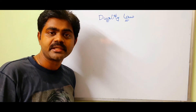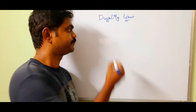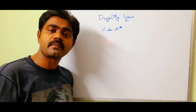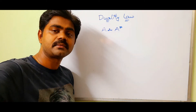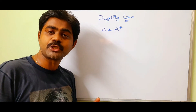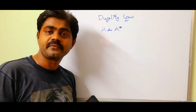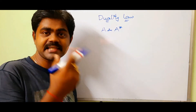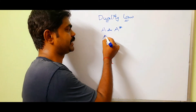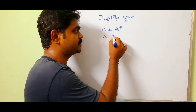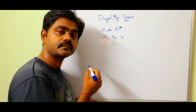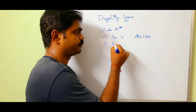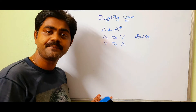So what is duality law? For example, if we have two formulas A and A star. These two formulas A and A star are said to be dual to each other if and only if one can be obtained from the other by changing the symbol — for example, AND to OR, or OR to AND — then they are said to be dual.